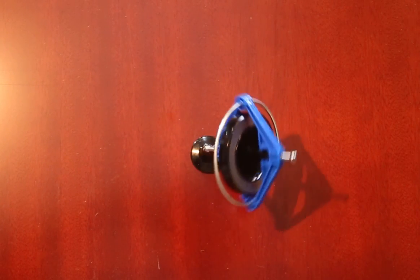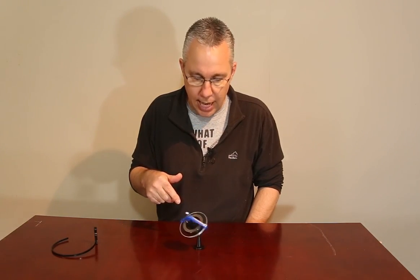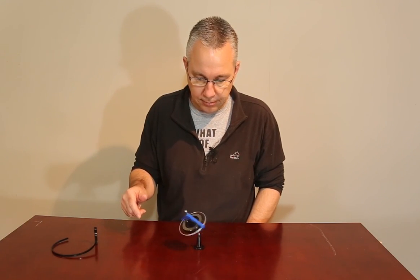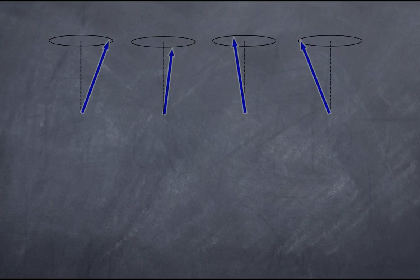If I grab it and lean it over a little bit further, it'll still rotate. Now, of course, the slower the object spins, that's going to affect the actual precession that's going on.